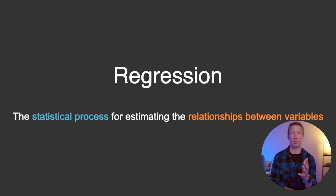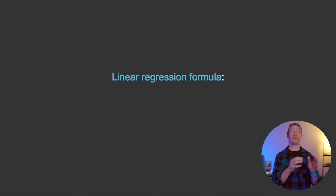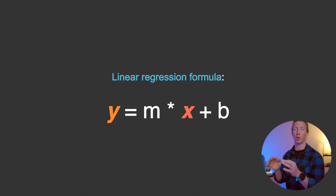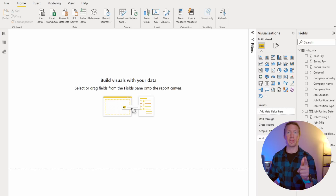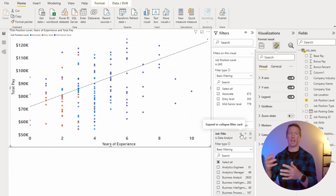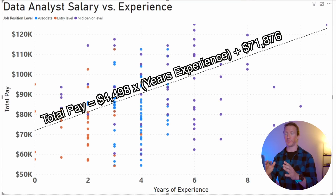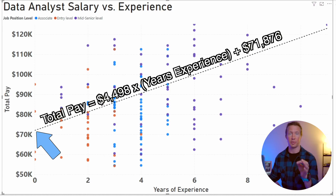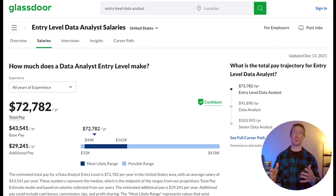Let's get into regression. This is a part of statistics that uses one or multiple variables to explain another variable. In our work case, let's try to use a variable to help explain or even predict what the total pay of data analysts should be. Years of experience seems to be one of the best starting points for predicting this. From here, we can use linear regression — or in the case of Power BI, a trend line — to get a predictor of what salaries should be based on years of experience. For this model, at zero years of experience the expected salary is $72,000, and at 10 years you would be making $117,000. Checking this estimate against Glassdoor, we can see this estimate is actually pretty close, with its average salary being around $73,000 for entry-level data analysts.